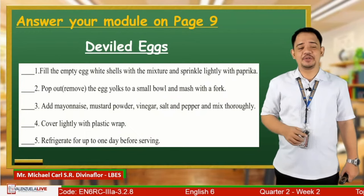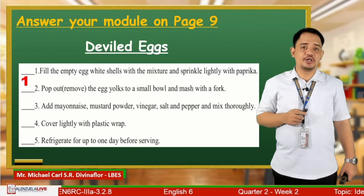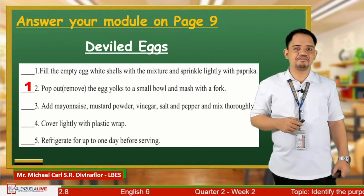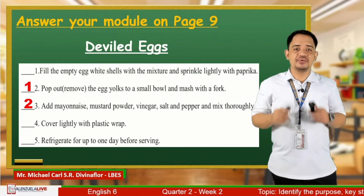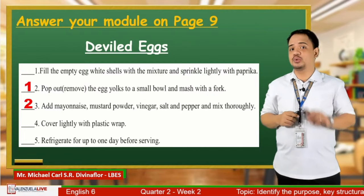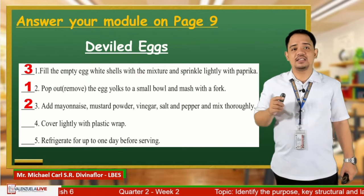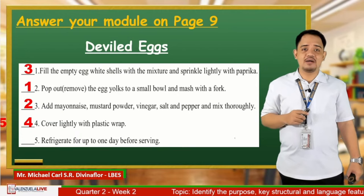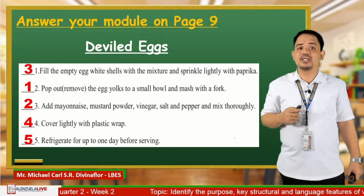Your time is up. Let us answer. The first in our sequence is: pop out or remove the egg yolk to a small bowl and mash with a fork — that is number one. The second is adding mayonnaise, mustard powder, vinegar, salt, and pepper and mixing thoroughly — that is number two. Next, for number three, fill the empty egg white shells with the mixture and sprinkle lightly with paprika. For number four, cover the eggs lightly with plastic wrap. And for number five or lastly, refrigerate for up to one day before serving.